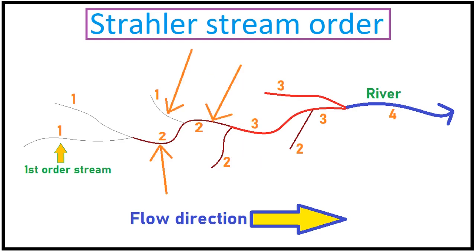However, be aware that when two streams with different orders join and flow in a single channel, the resultant stream order will not increase and will remain at the higher order stream among them. For example, when a first order stream meets a second order stream, the channel that follows is again of the second order.